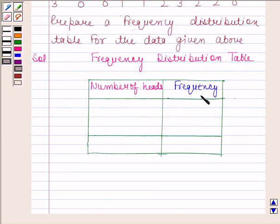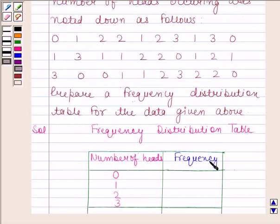Now as the coin is tossed three times, the number of heads which may appear are 0, 1, 2, 3. Now frequency means the number of times an observation occurs in the given data. Now look at the data.